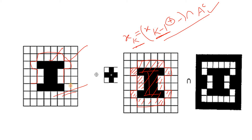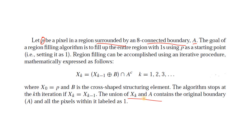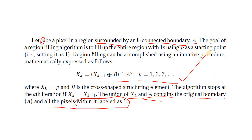Our original image had a hole — the boundary was already one but the inside was white. After the algorithm the hollow part has been filled and converted to object pixels. Now if we take the union of X(k) with the original image A, the whole region becomes one — the hollow part inside our original object is filled. In this way we achieve region filling in binary images. In my next video I will be showing you the MATLAB implementation. Thank you for watching.